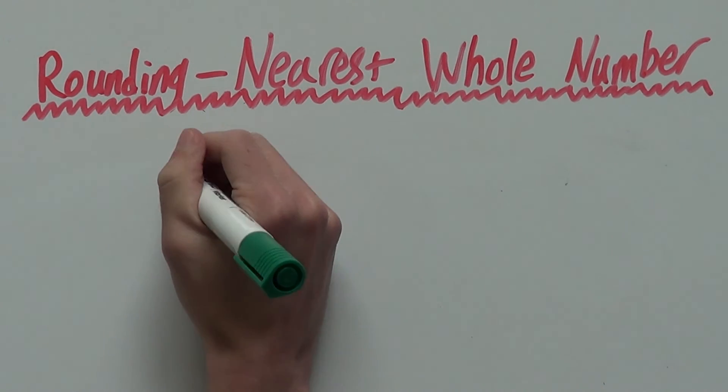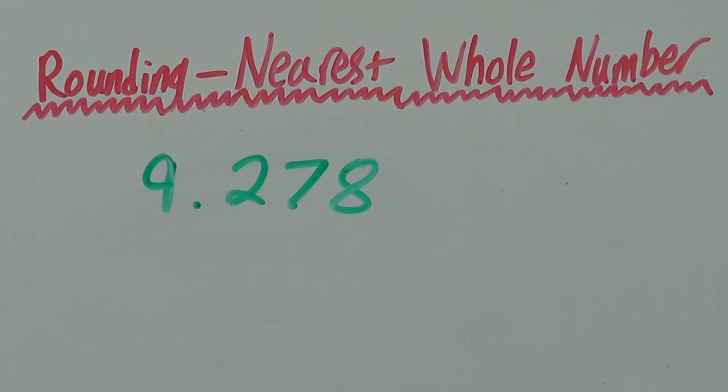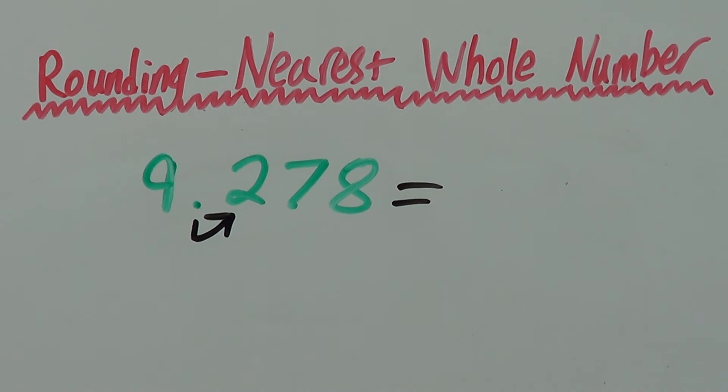Anyway, last example, let's say we have 9.278. This one here may confuse you as you're like, whoa, there's so many digits. But, remember, the only one that matters is the one right behind the decimal. So, these last two, don't worry about them.